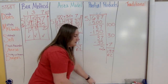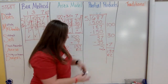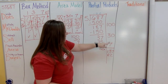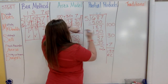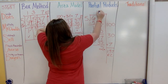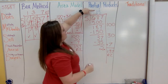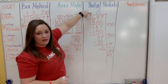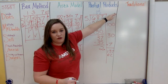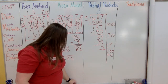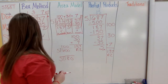Some teachers have students write 100, then 30, then 7 on top and add those together to still get 137 remainder 2. So there are two different ways to format partial products. And finally, let's do the traditional method of long division.